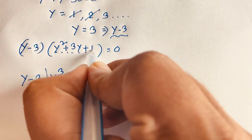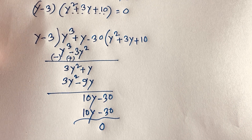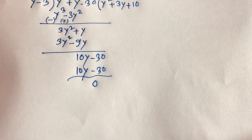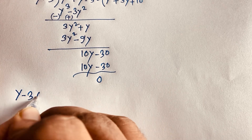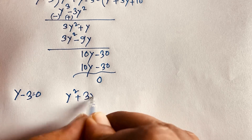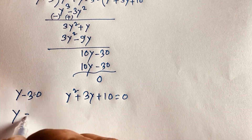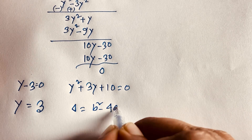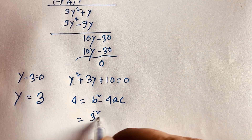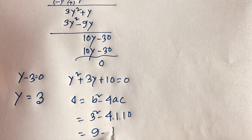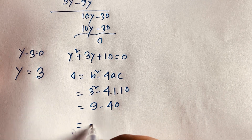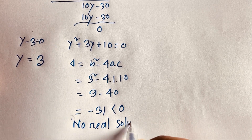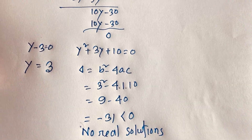So we get two cases: (y − 3) = 0, or y² + 3y + 10 = 0. For the quadratic, the discriminant is b² − 4ac = 3² − 4(1)(10) = 9 − 40 = −31. Since −31 < 0, there is no real solution from the quadratic — only complex solutions. So we need only y = 3.